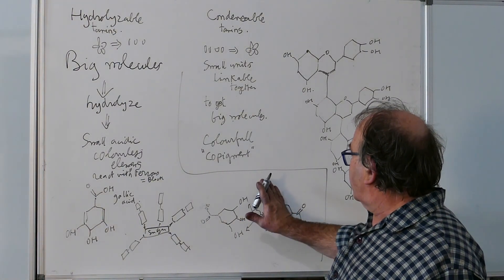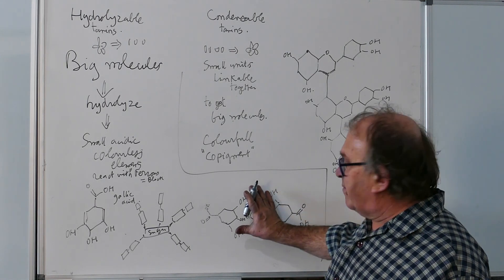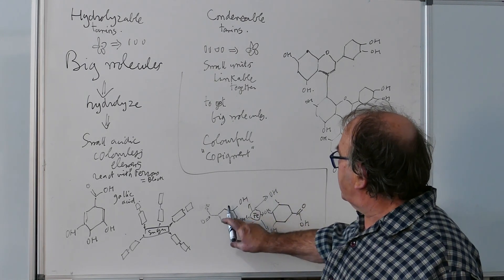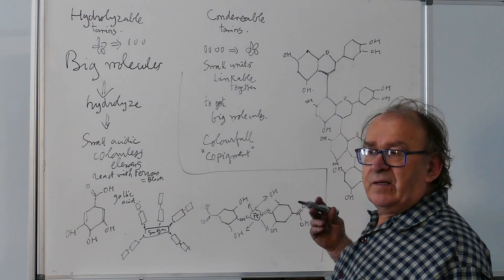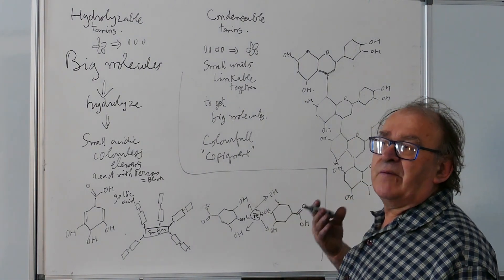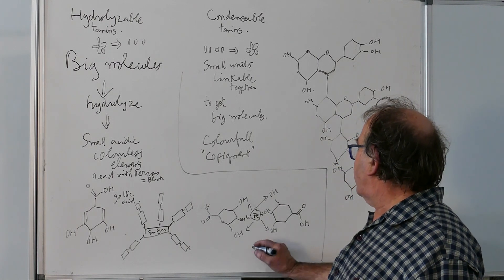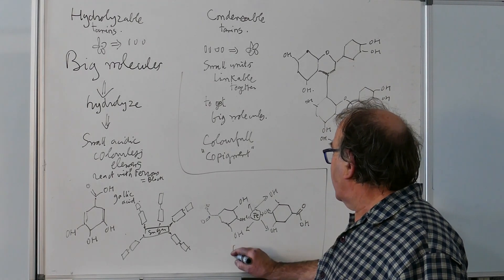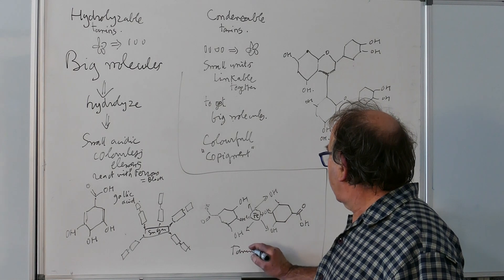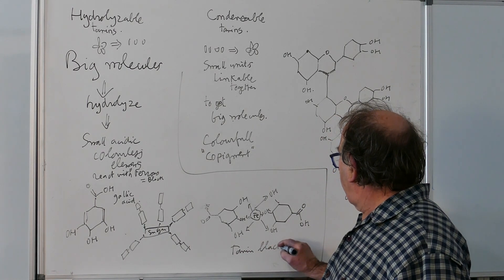So, it is like, if it doesn't exist anymore, this is blocked. So, you see the, this ring to be looking like black, absorbing all the light. So, that's the reason why this is a tannin black.